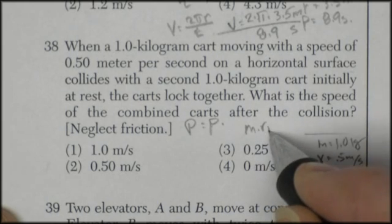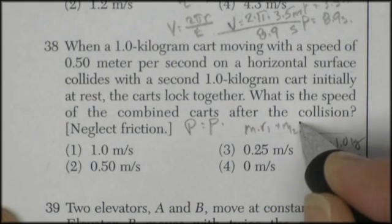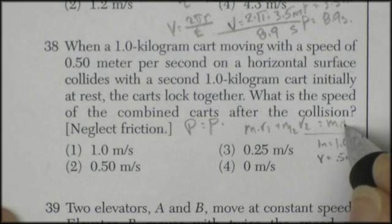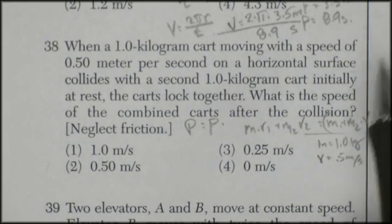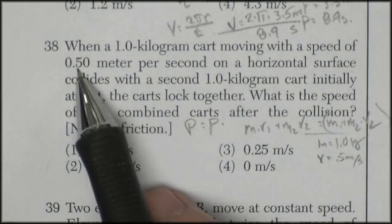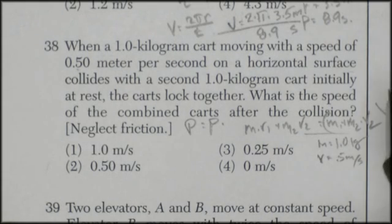So m1 v1 plus m2 v2 before is equal to m1 plus m2 times v2. Because now they're stuck together, so it's one big mass driving over velocity. And so I could do the math, but I'm going to say that the answer's got to be less than half a meter per second.